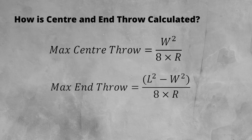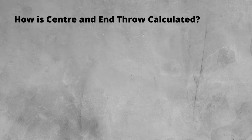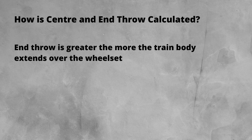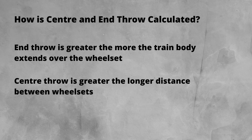We then have different equations for the centre and end throws. As the dimensions of trains are normally given in metres, these equations give the throw values also in metres. If we were to run a few different lengths of train body and wheelbases through these equations, you would notice that end throw is greater when more of the train body extends over the wheelsets. For centre throw, this is also greater the longer the distance between the wheelsets. Again, both throw values increase the tighter the radius of the curve.